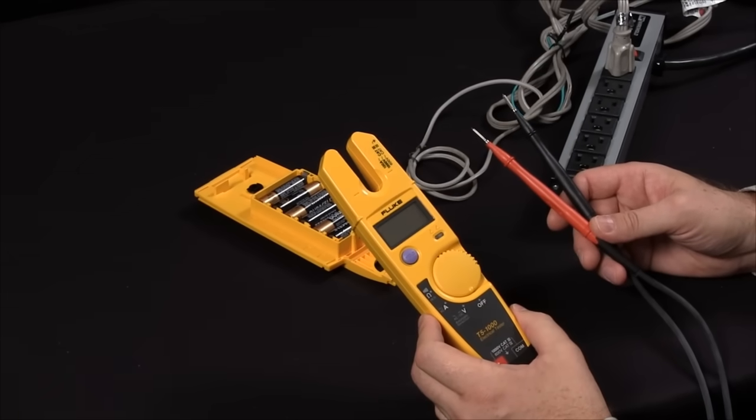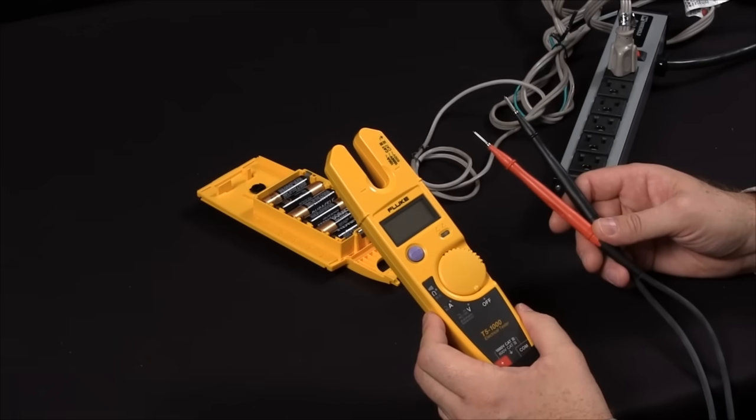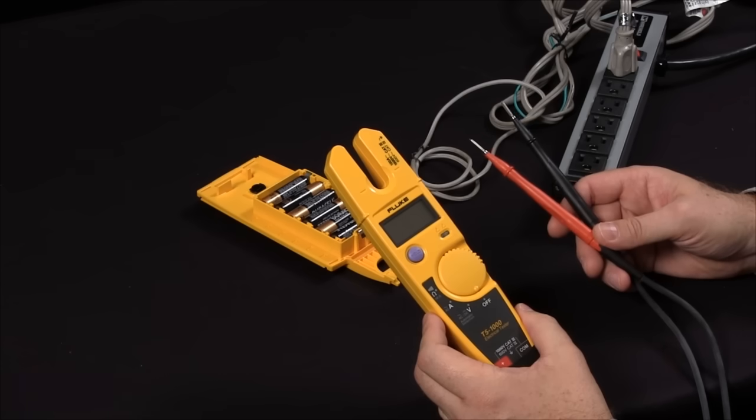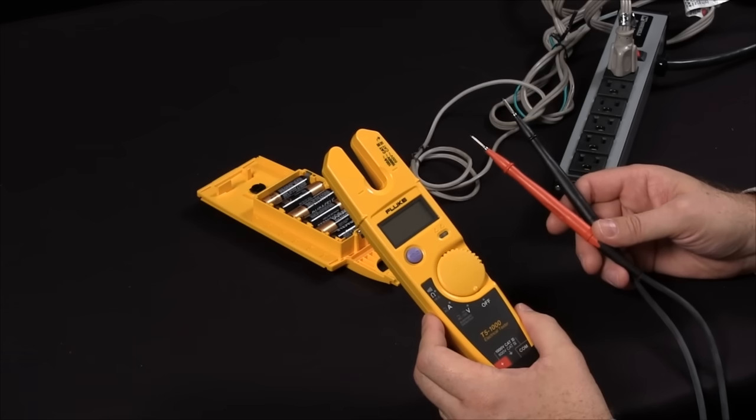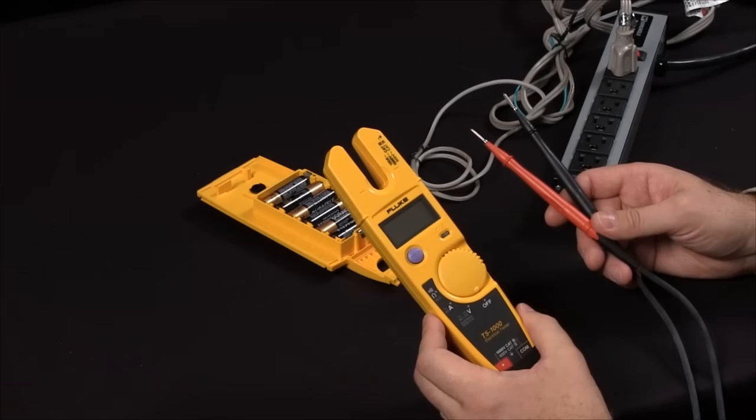Today, I will show you how to make measurements with the Fluke T5. This comes in two different styles. We have a T5 600, which measures up to 600 volts AC, and the T5 1000, which will measure up to 1000 volts AC.